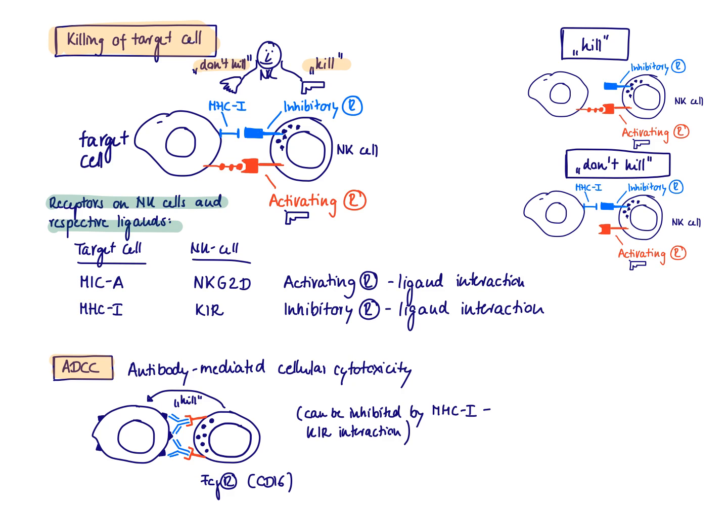We already mentioned a very important ligand for the inhibitory receptor, which is MHC class 1. And inhibitory receptors are referred to as killer immunoglobulin-like receptors, which are a famous family of inhibitory receptors. Those inhibitory receptor-ligand interactions will prevent the NK cell from killing its target cell.